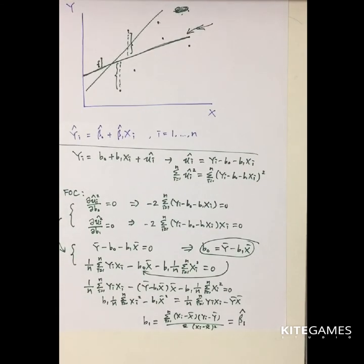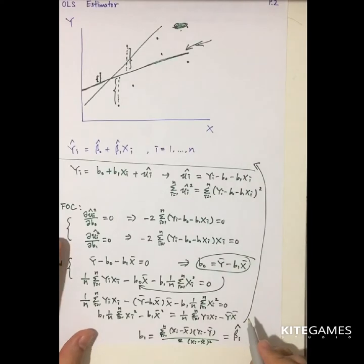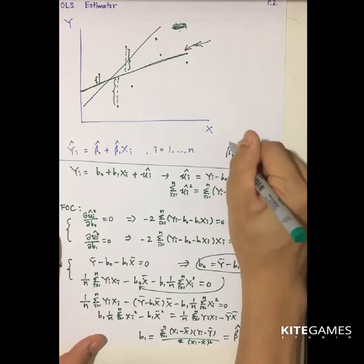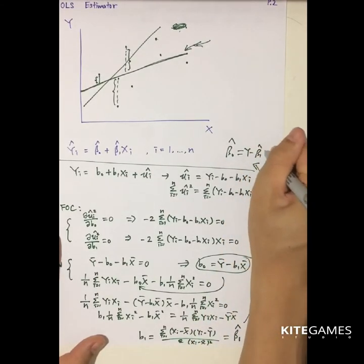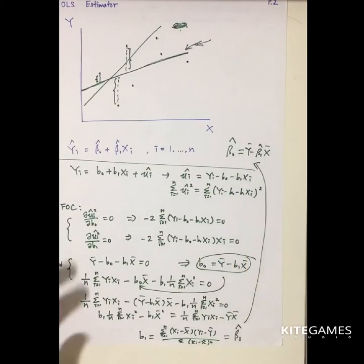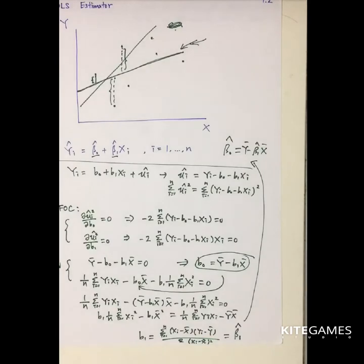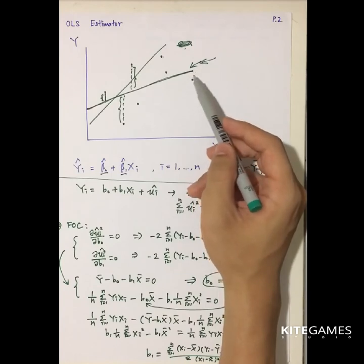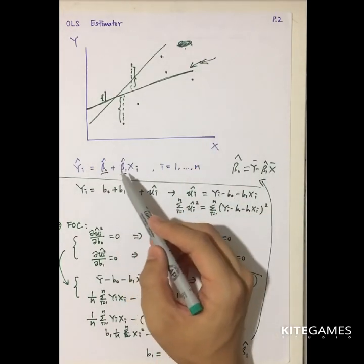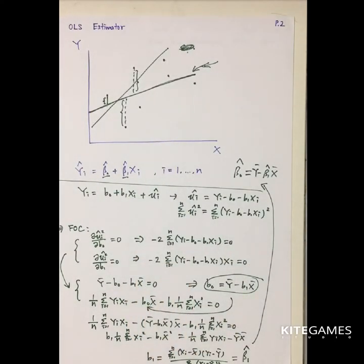After you get beta 1 hat, beta 0 hat is very simple. By the first-order condition relation, beta 0 hat equals y-bar minus beta 1 hat times x-bar. Eventually you can find all the beta 0 hat and beta 1 hat, then plug them into the equation to get the OLS equation. This is the estimator of your population — you use this to estimate the population.